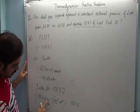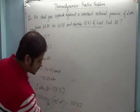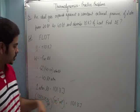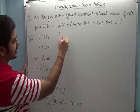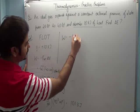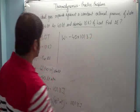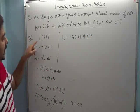And newton into meter gives you joules. So effectively, one liter-atmosphere equals 101.3 joules. Therefore, I can say that work done is minus 40 into 101.3 joules.